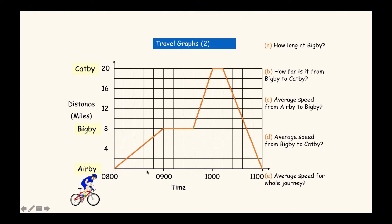The next distance-time graph goes from 8 o'clock to 11, which is three hours. Eight till nine is five squares, so 60 minutes divided by 5 means each square is 12 minutes. The first question asks how long they spent at Big B. Looking at the graph, they stayed for three squares; 3 times 12 is 36, so they spent 36 minutes at Big B.